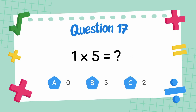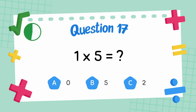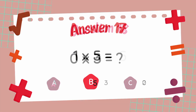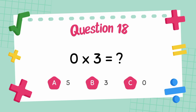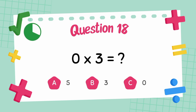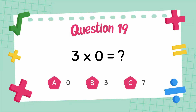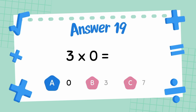What is 1 multiply 5? The answer is 5. What is 0 multiply 3? The answer is 0. What is 3 multiply 0? The answer is 0.